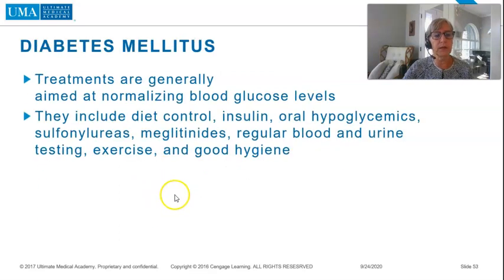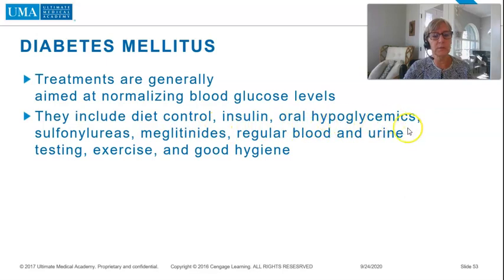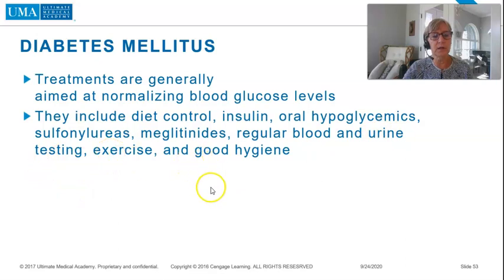Treatments for diabetes are generally aimed at normalizing blood glucose levels. They include diet control, insulin, oral hypoglycemics such as sulfonylureas and meglitinides, regular blood and urine testing, exercise, and good hygiene.